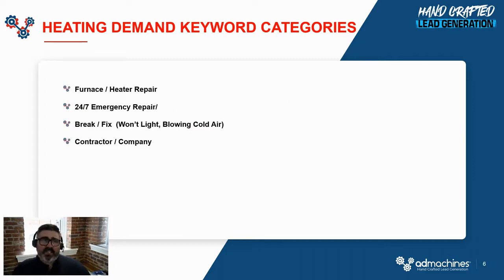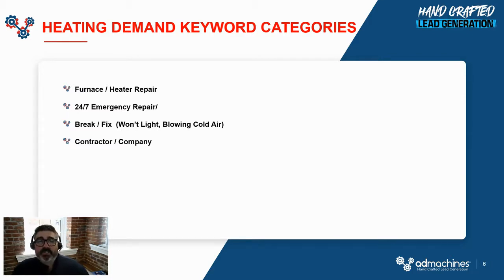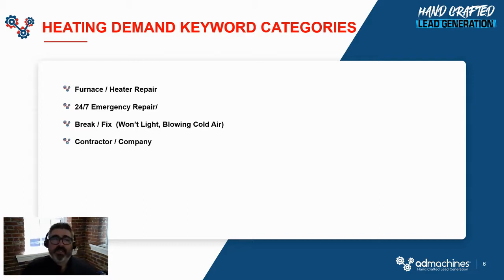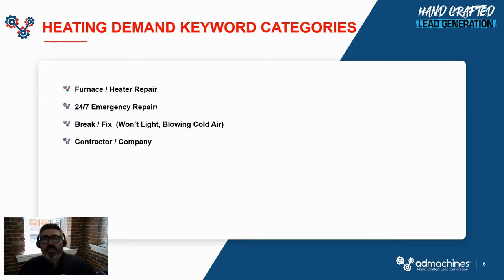Let me talk about some of the categories to expect in this campaign. As mentioned, there are about 500 keywords — we're really focused on furnace repair, heater repair, emergency service, emergency repair, all the break-fix categories. There are at least 100 keywords where somebody types in things like 'my furnace won't light,' 'the furnace is blowing cold air,' 'it won't heat,' 'it's overheating.' So there are a lot of troubleshooting calls in here to really help you get in front of those types of opportunities, and then of course people who are looking for a local heating contractor.